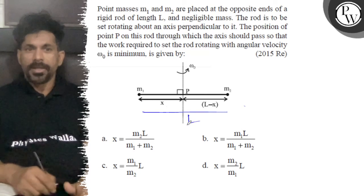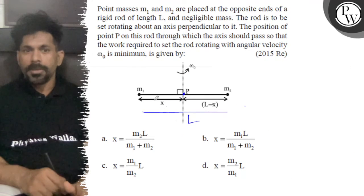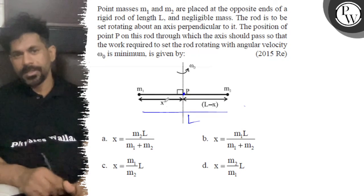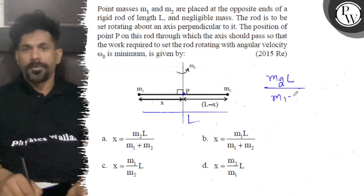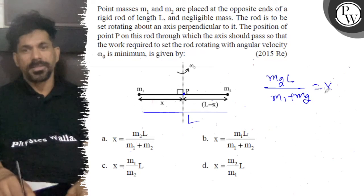The center of mass, where will it be? And where is the position of point P on the road? Point P on the road, the x will be removed. So it is M2 L upon M1 plus M2. That's it. That is x.